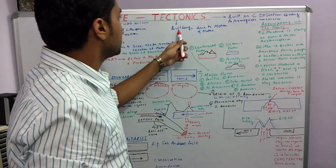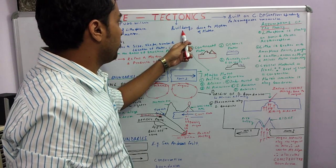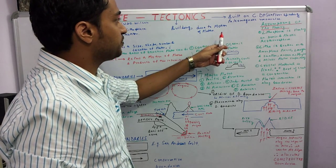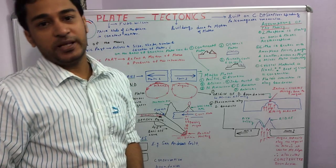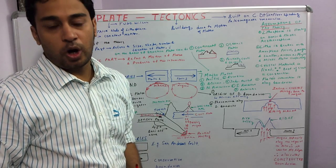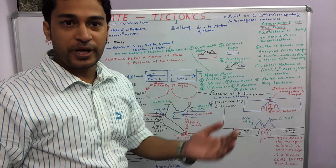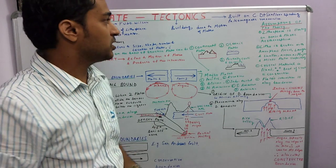While the word tectonics has been derived from a Greek word which means building, and this building happens due to the motion of plates. The theory of plate tectonics was built on certain old theories like the continental drift theory, sea floor spreading, and the paleomagnetic researches.